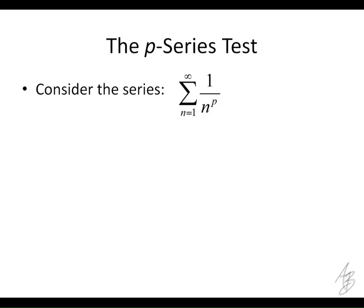It's in this form: 1 over n to the P, and so it gets its name, the P-Series test, from this P, the exponent here. And P is going to be some constant. It's going to be some number.